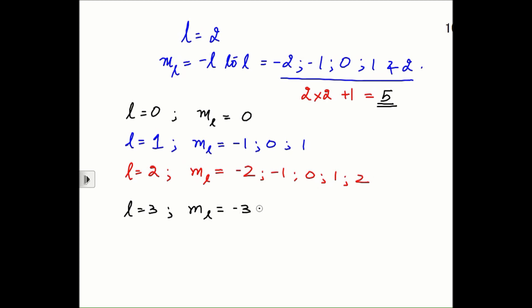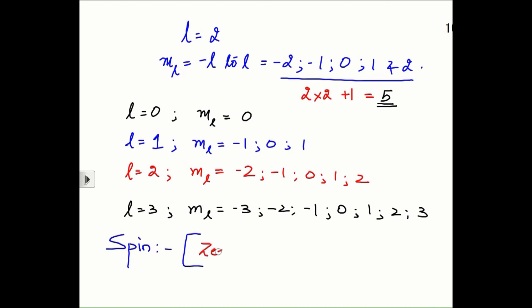When they knew these three quantum numbers they thought they had pretty much known everything about the atom. It took some time to get from the magnetic quantum number to the spin quantum number. There were two effects — the Zeeman effect and the Stark effect — involving splitting of spectral lines. Based on these two effects, one more quantum number was proposed which could take only two values: plus half and minus half. So you would have spin paired or spin unpaired, leading to paramagnetism, diamagnetism, and so on.